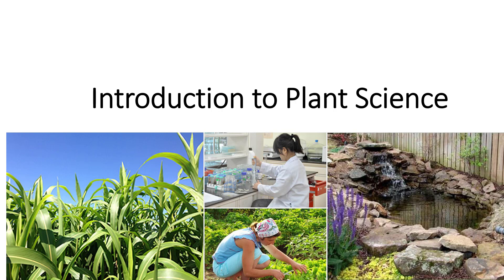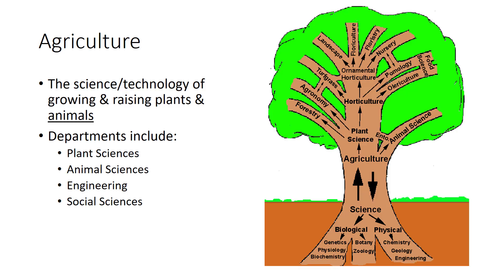I'm Dr. Busk and this video will introduce you to some of the terms used in horticulture and the history of agriculture. Agriculture describes the production of plants and animals to meet basic human needs. Humans need food, clothing, and shelter to survive, and all of these come from plants. Agriculture is manifested in a variety of disciplines in major land-grant universities today.